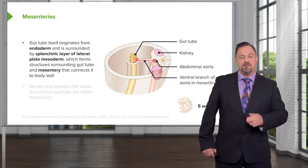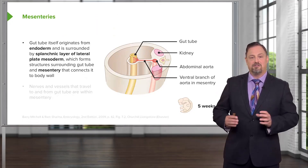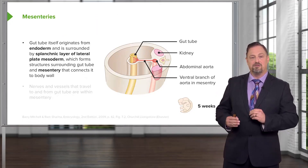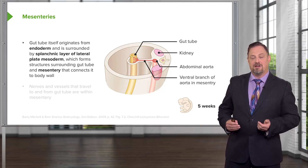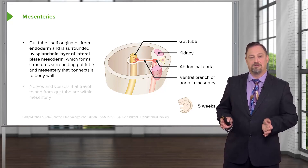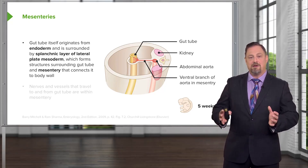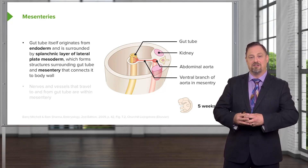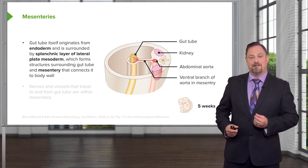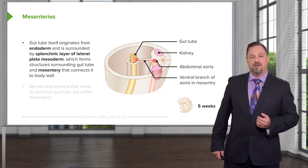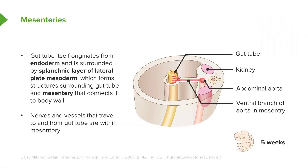Now let's return to a cross section of the body and see how the gut tube is suspended by its dorsal mesentery. The dorsal mesentery comes into existence because the splanchnopleure is wrapping around as the gut tube becomes an actual tube, and it allows blood vessels to travel to and from the gut tube. Nerves, vessels, and other structures that need to support the gut tube and carry nutrients away and carry arterial-rich blood to the organs of the GI system can only get there if there's a mesentery connecting it to the posterior body wall.